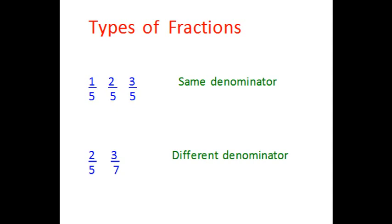If you look at 2 over 5 and 3 over 5, you know that 3 over 5 is bigger than 2 over 5, because if I make five parts of something and pick up 3, that would be more than picking up two parts. Whereas with 2 over 5 and 3 over 7, it's not easy to tell which one is bigger — like if I cut an apple into five equal parts and eat 2, or cut it into seven equal parts and eat 3.